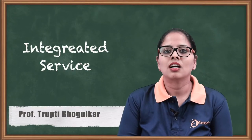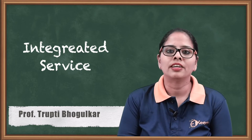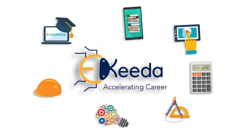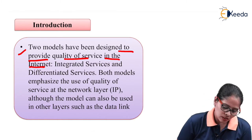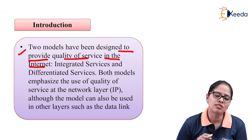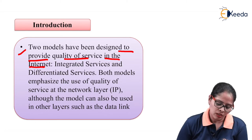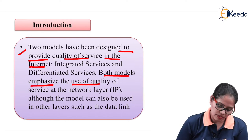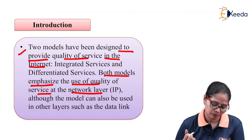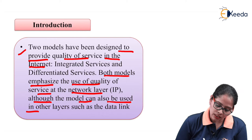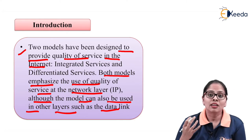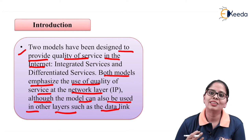Hello friends, let us discuss how quality of service is achieved using the integrated service model. Two models have been designed to provide quality of service: the first is integrated service and the second is differentiated service. Both models emphasize the use of quality of service at the network layer. Basically, with the help of the network layer we are achieving quality of service, although the model can also be used in other layers such as the data link layer.